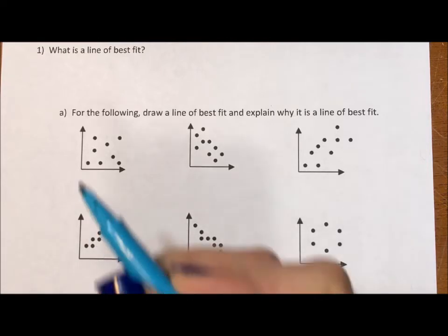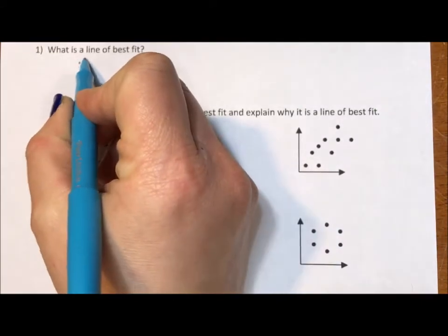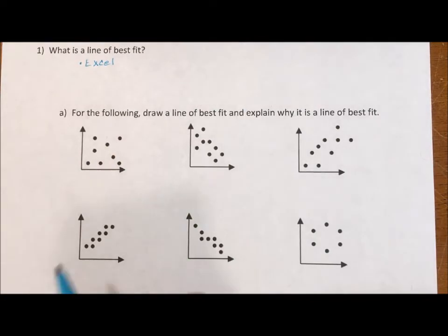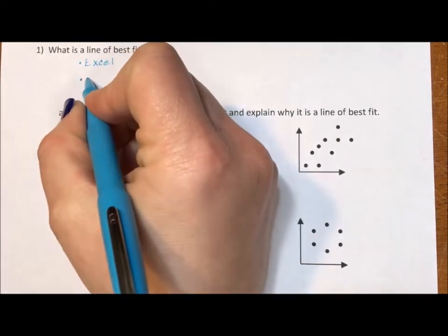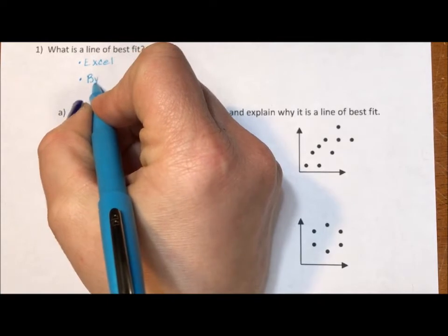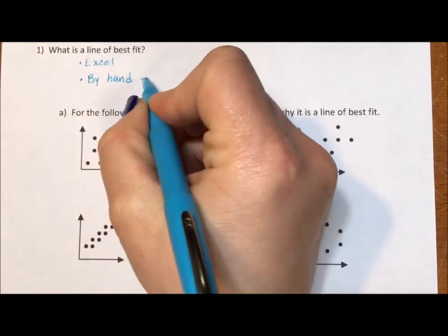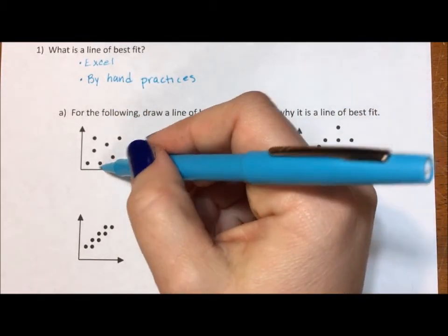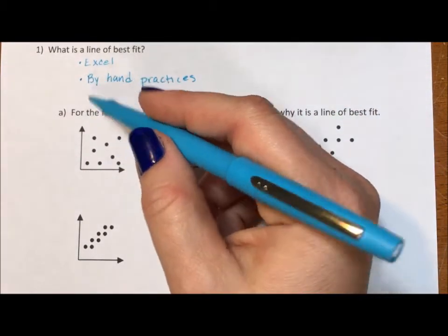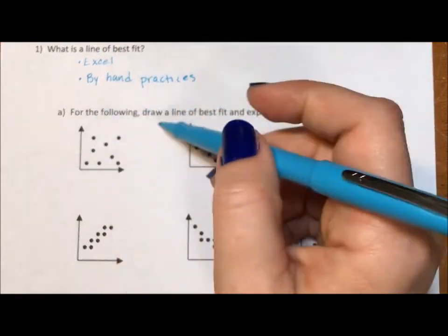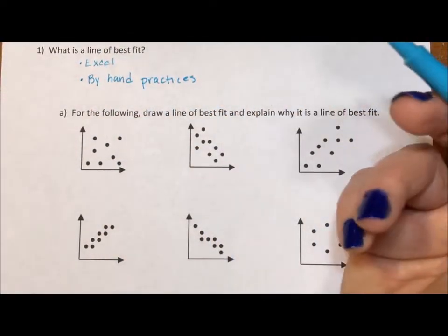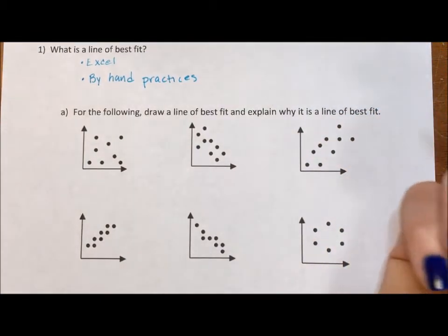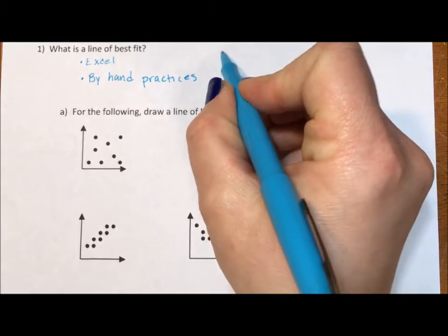There are a lot of ways that you could figure out a line of best fit. You could go on to Excel and ask it to tell you what the line of best fit is. There are mathematical equations, there are by hand practices, things where you trisect, find the mean point of each and find the line through those. But what I really want to talk about is the eyeball line of best fit.